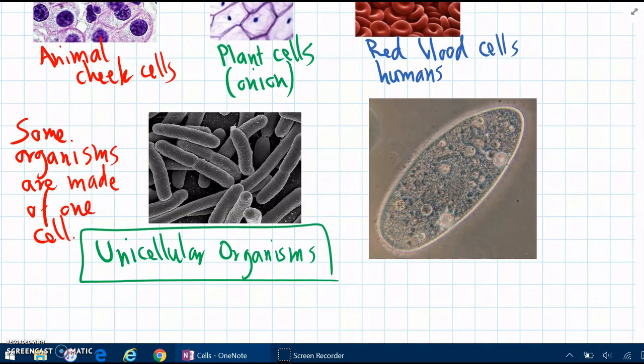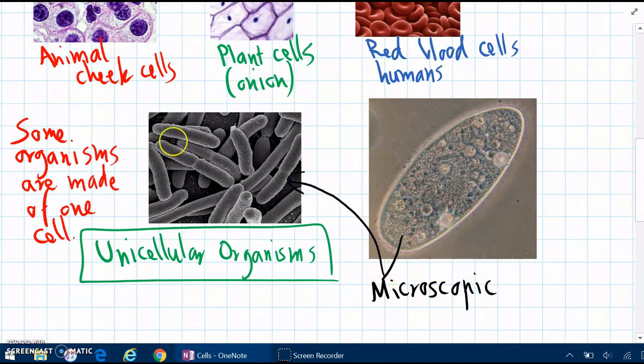So we can see here, here's one cell, and these organisms are so small that they're microscopic. And we need a microscope to even see them. And these ones are too. We can see lots of individual organisms here. So each little rod, that's a different organism.